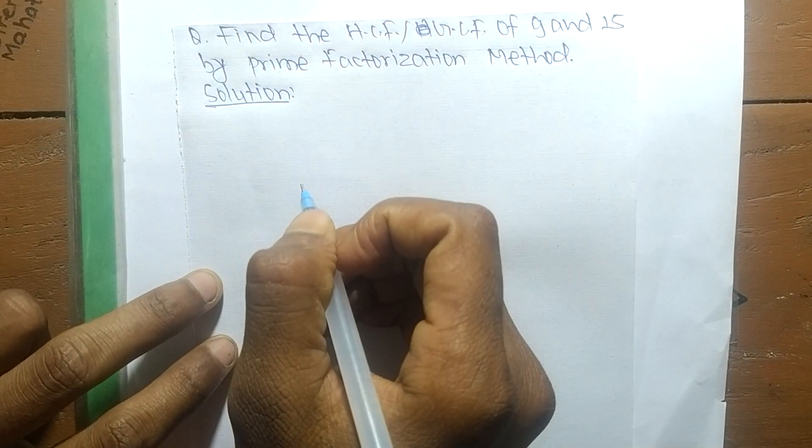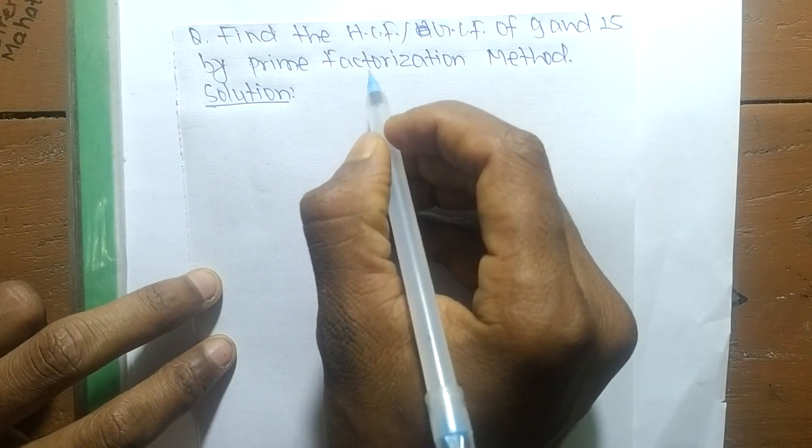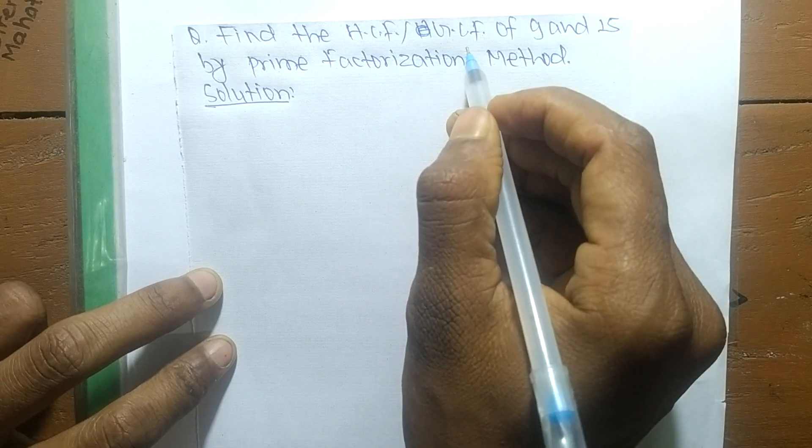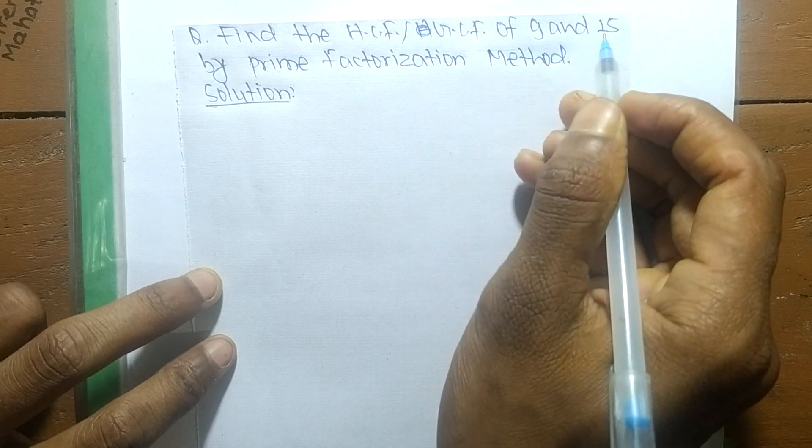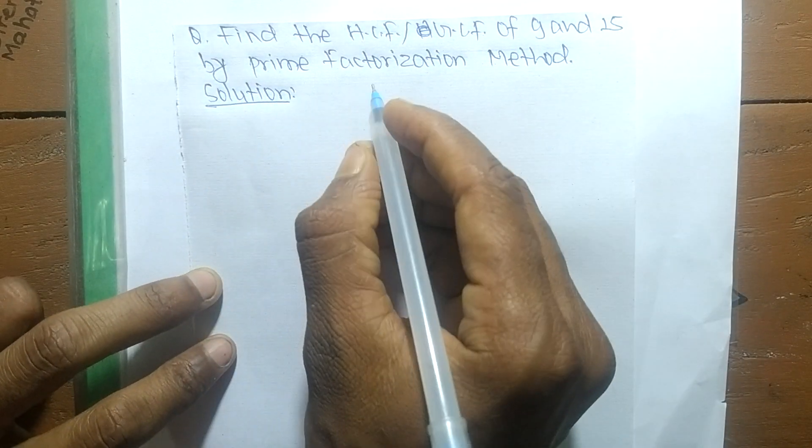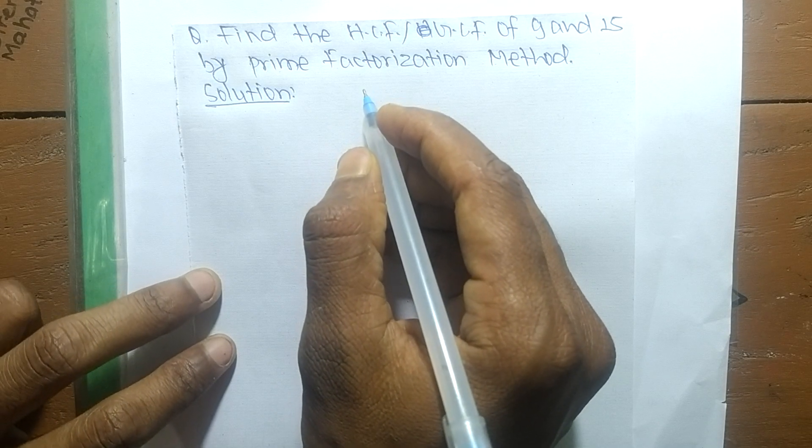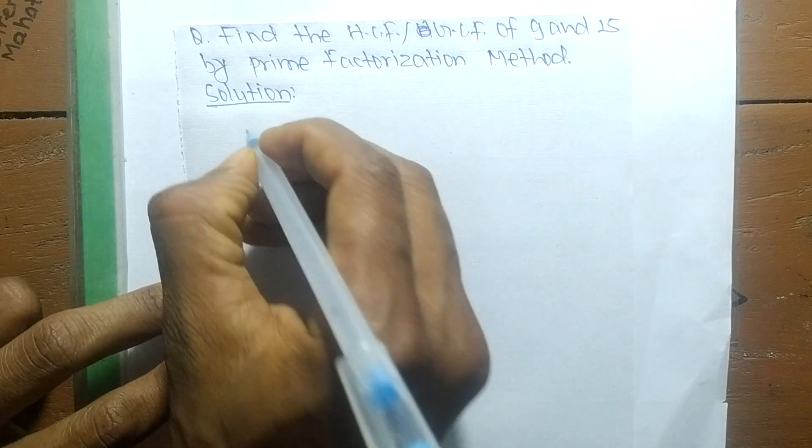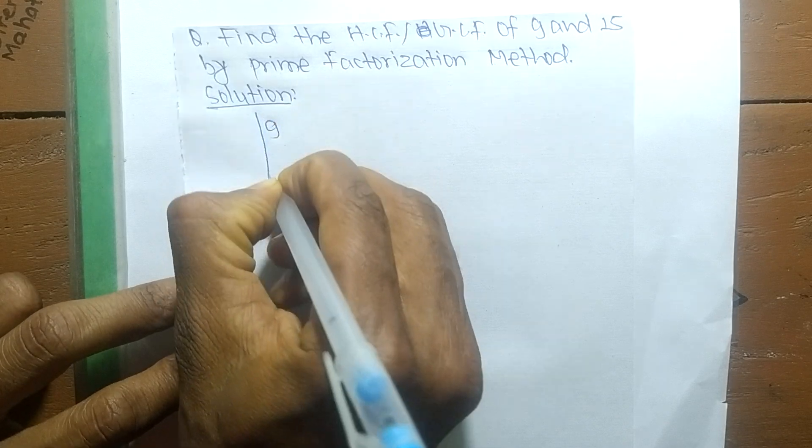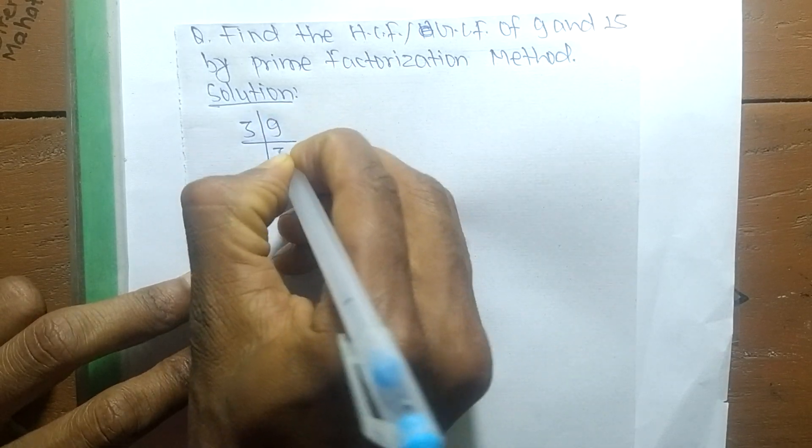Today in this video we shall learn to find the HCF or GCF of 9 and 15 by prime factorization method. First, we find out the prime factors of 9, so it is 3 times 3 equals 9, and 3 times 1 equals 3.